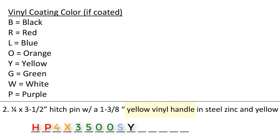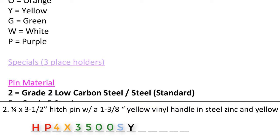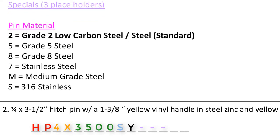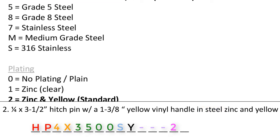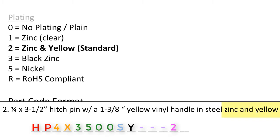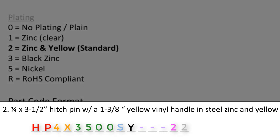Next we have specials. There's nothing else special about this part other than the yellow vinyl, so we enter three dashes within the three placeholders allocated for specials. Then we have pin material — the standard steel translates to a 2. Then we have plating, called out as zinc and yellow, which translates to a 2 within a part code. Number 2's part code would read: HP-4X-3500-S-Y---22.